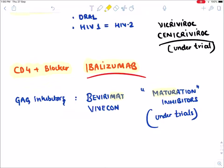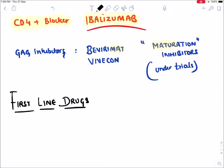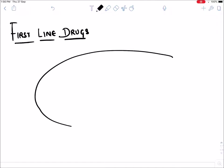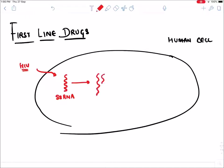Those were the second-line drugs given only as add-on drugs. Now let's talk about first-line drugs in HIV. Suppose this is a human cell and the HIV virus has now entered into the human cell. When it enters, remember it contains single-stranded RNA. This single-stranded RNA of HIV virus gets converted into double-stranded DNA.